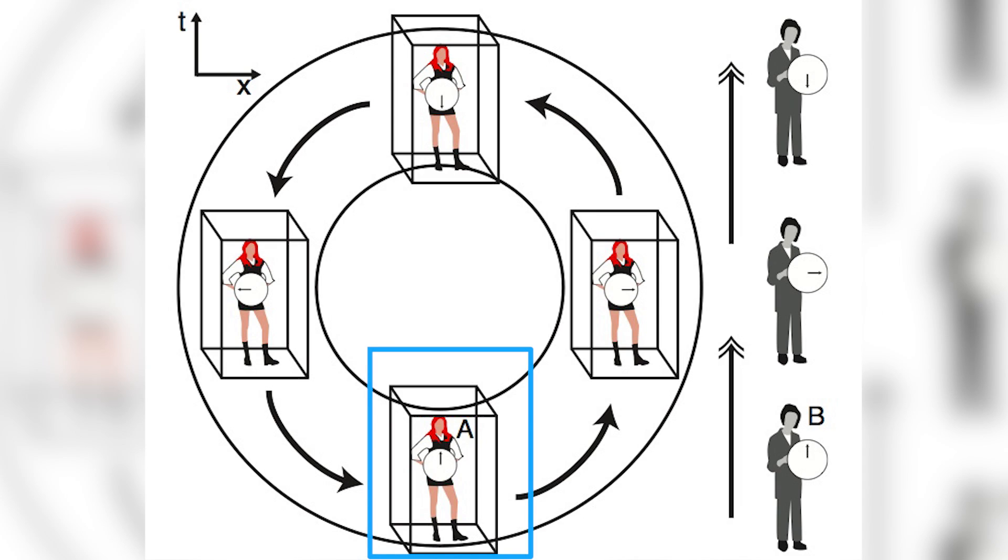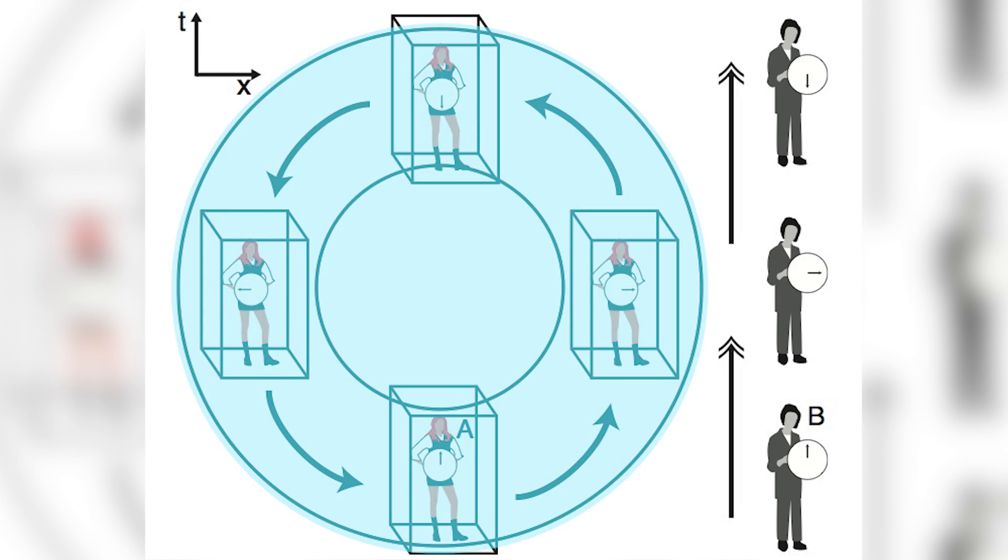You see here, Person A is the time machine passenger and Person B is the observer. Both Person A and Person B will experience time in dramatically different ways. Within the bubble, A will see B's events periodically evolve and then reverse.